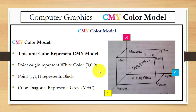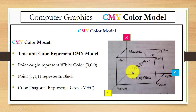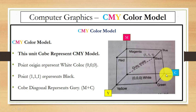In this unit cube we have a point (0, 0, 0) at the origin, which represents white color. And the point (1, 1, 1) represents black color. You can also see the diagonal line, which represents gray color. And you can see this is the combination of magenta and cyan.